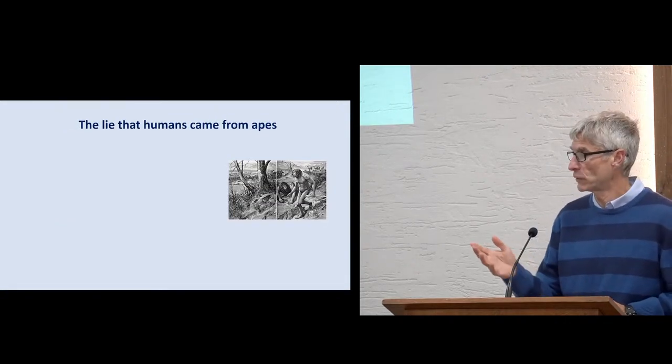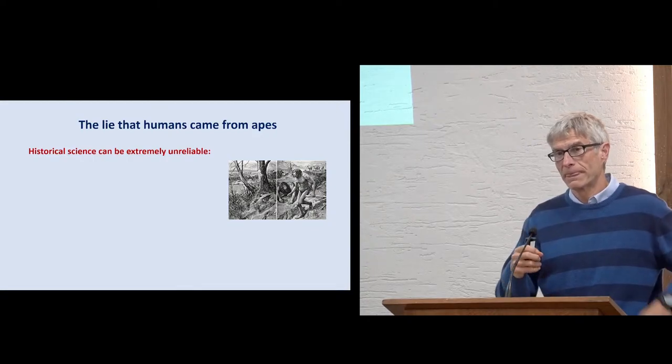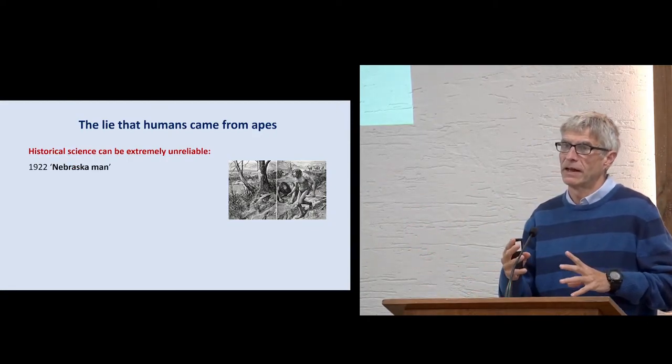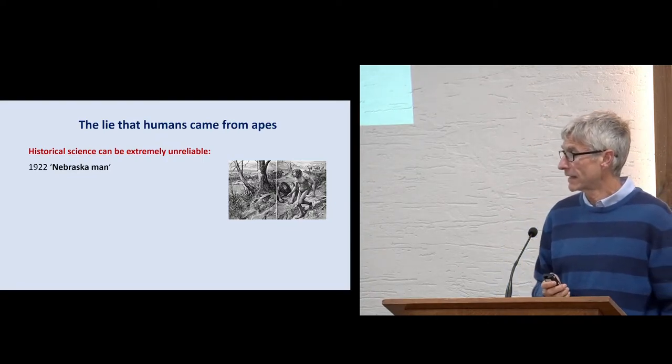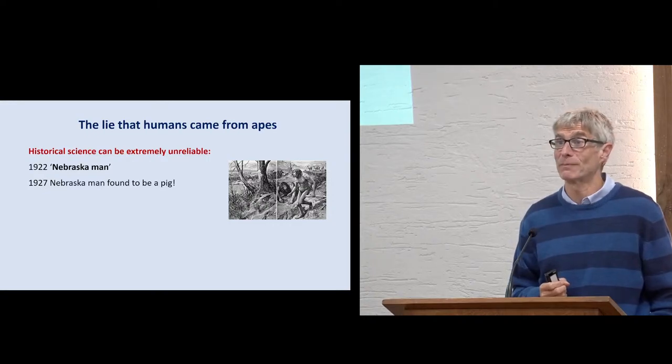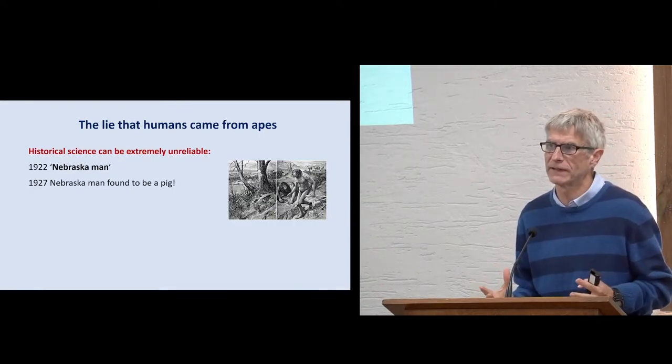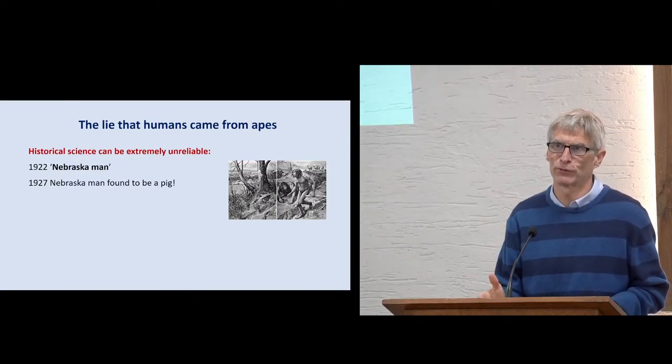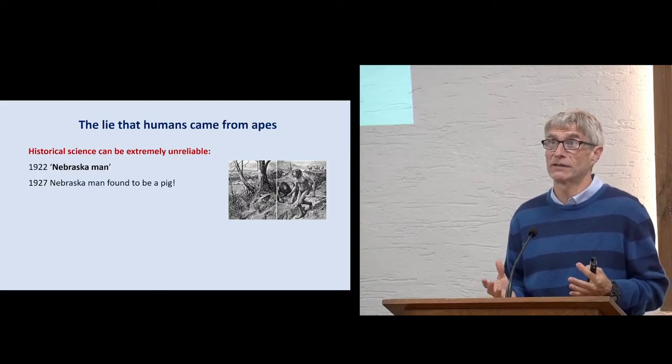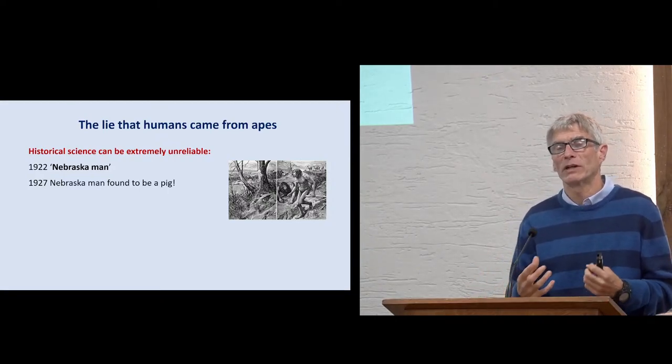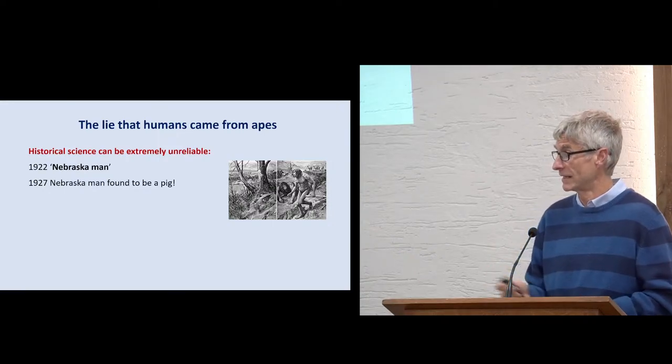Let me just give you a few other examples. The lie that humans came from apes. First, in 1922, there were world headlines that scientists had found this intermediate ape-man, the missing link between apes and humans. Then, in 1927, it was found to be a pig, not a man. Now there's an important point here. You sometimes hear, well, evolution is science, so you've got to believe it, because it's science. Evolution is historical science. It's not observational science. When it comes to observational science, you can be very confident in science. But when it comes to historical science, historical science can be spectacularly wrong, really spectacularly wrong. And this is an example of that.